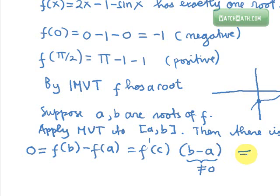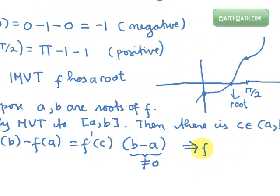So this implies that the derivative of f at c is equal to 0. Now what we need to do is to show that it is not possible for the derivative of f at c to equal 0.